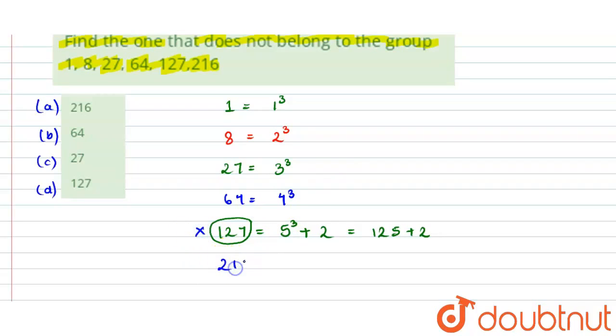Next, we have 216, which is 6 cube. So, what is the wrong term? 127 is the wrong term. This means it doesn't belong in this group. So, option D will be the correct option. Thank you.